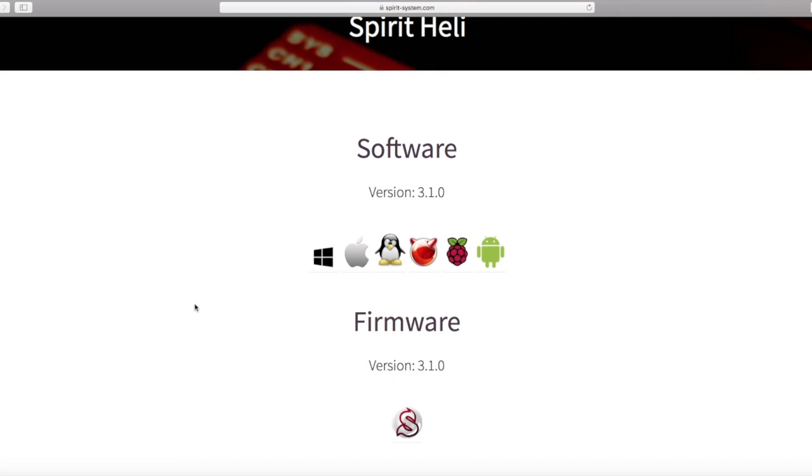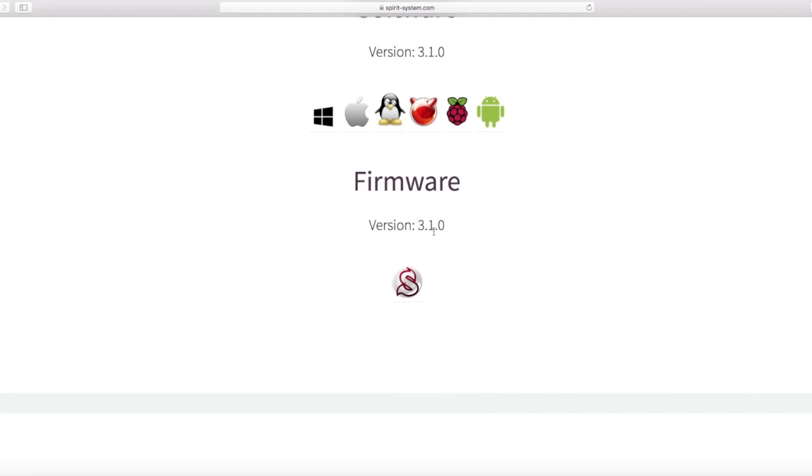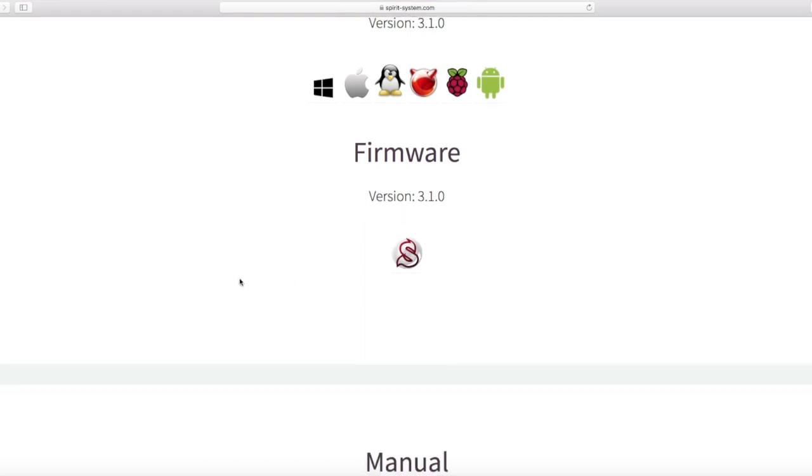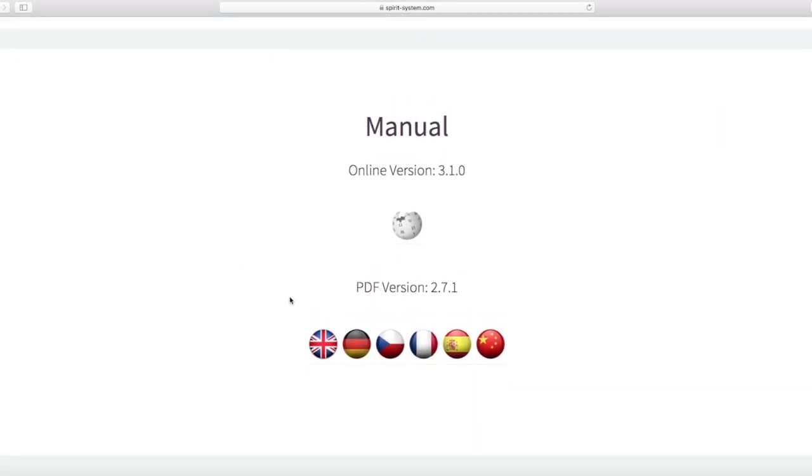So get that done, and then if we go over here to firmware, right, it's going to be version 3.1.0. Go ahead and download that too, but it's going to be like a flash. So if you try to open it, it usually, at least on my iOS, it said that there was no apps available to open it. I was a little confused. However, when we open up the software, I'll explain to you guys how to do that. And then also for all medicinal purposes here, you can download the PDF. Well, there you go. Mine was 2.7.1 when I got it, but the online version here they've got is 3.1.0. So you can do different languages and whatnot, and we'll be going through this manual together as we also complete the setup steps.